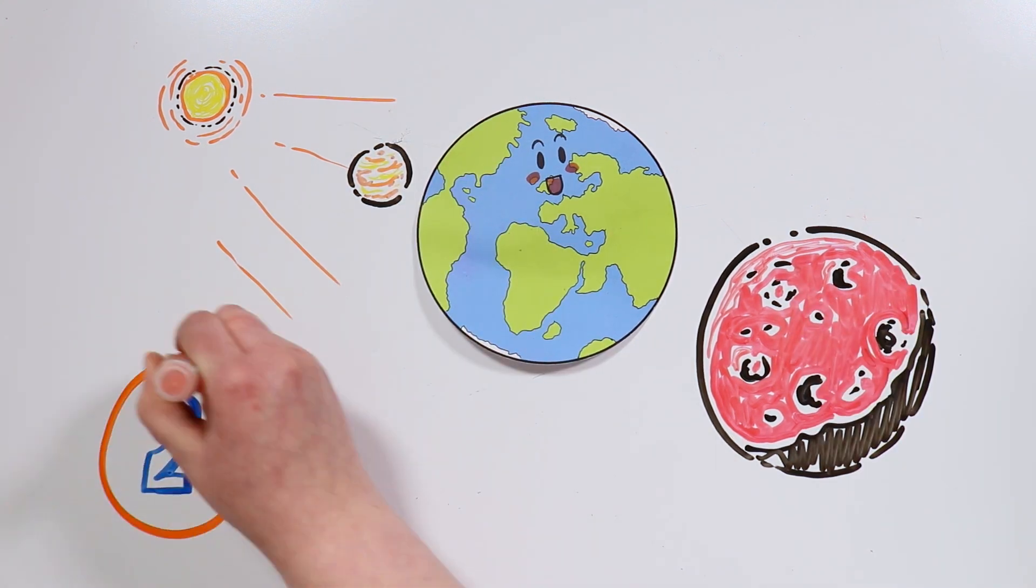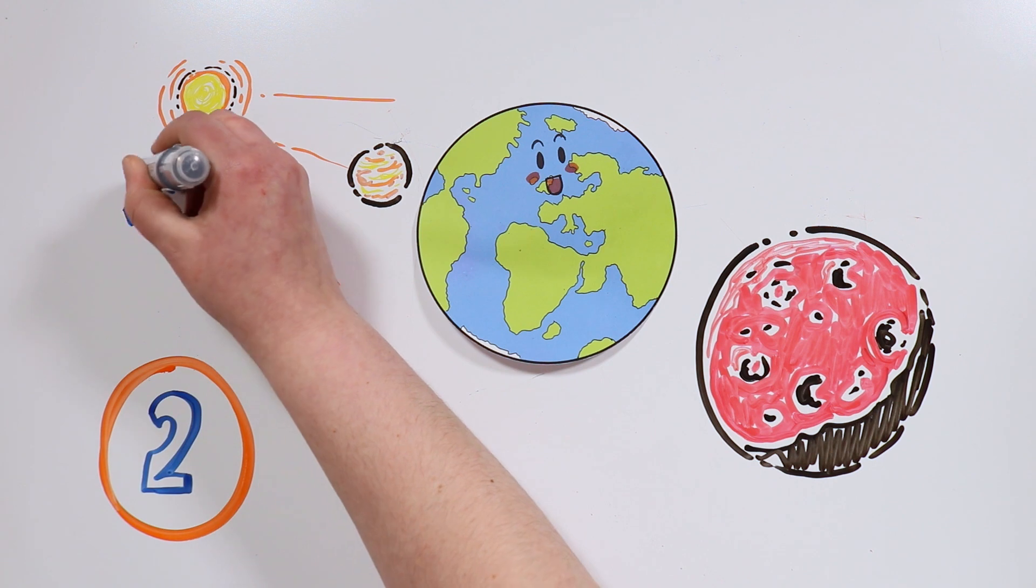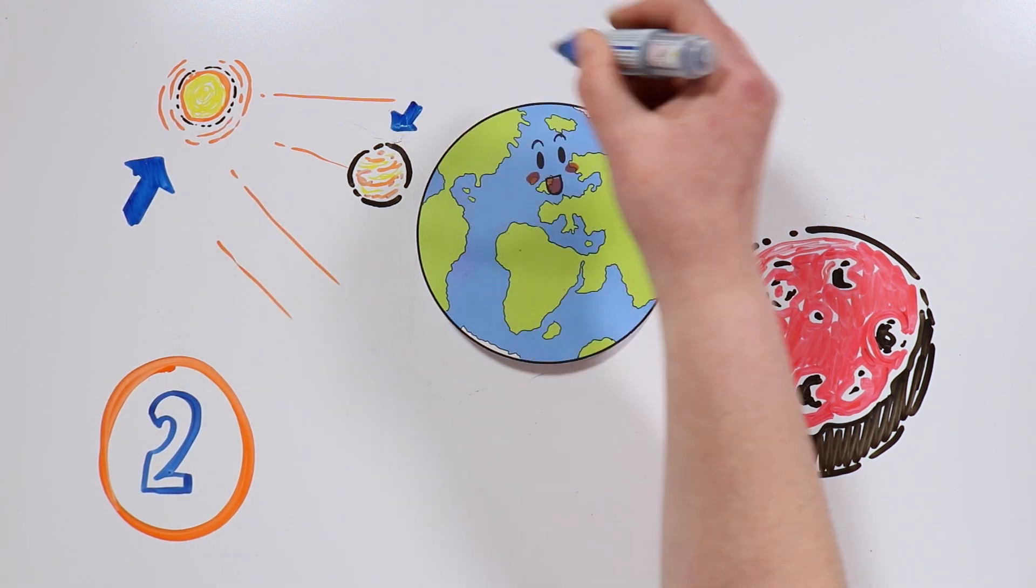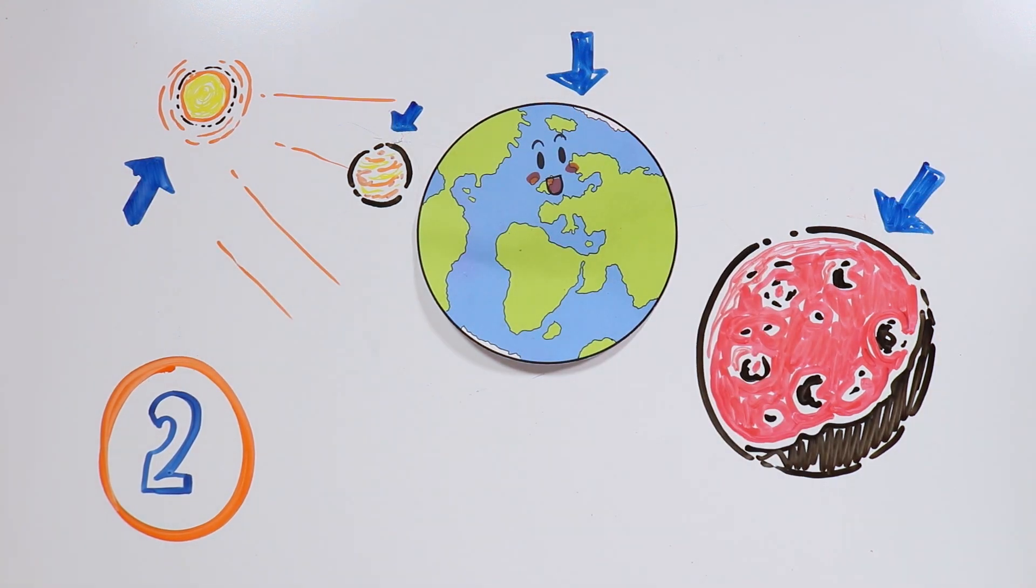To determine the habitability of a planet, there are two key factors – the sun's behavior, and the composition of the planet itself.